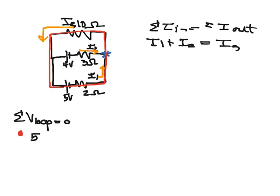I gain 5 volts from my battery, then I have to subtract off. So minus IR, so minus I1 times 2, and then the next thing I get to is this 10 ohm resistor, so minus I3 times 10, and I set that equal to 0.